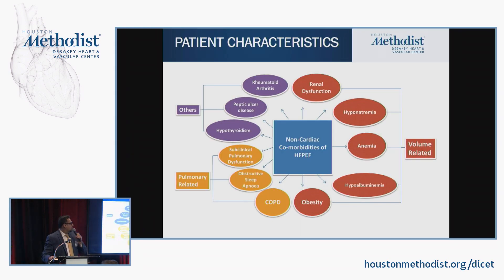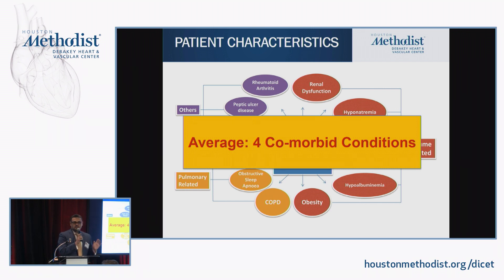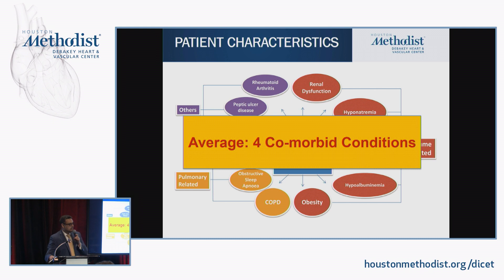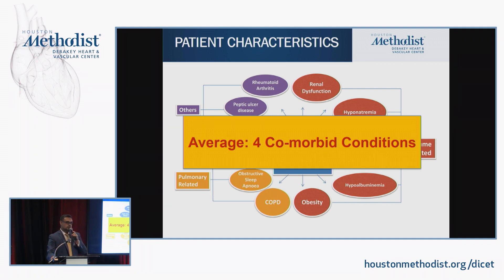On average, in terms of comorbidities, an average HFpEF patient would have at least four comorbidities. There's something called the Charlson Comorbidity Index. If you compare HFpEF with cancer, this is right up there — on average four comorbidities with heart failure with preserved ejection fraction. When we get into the pathophysiology of HFpEF, you will understand why comorbidity is an important distinct definer of HFpEF.